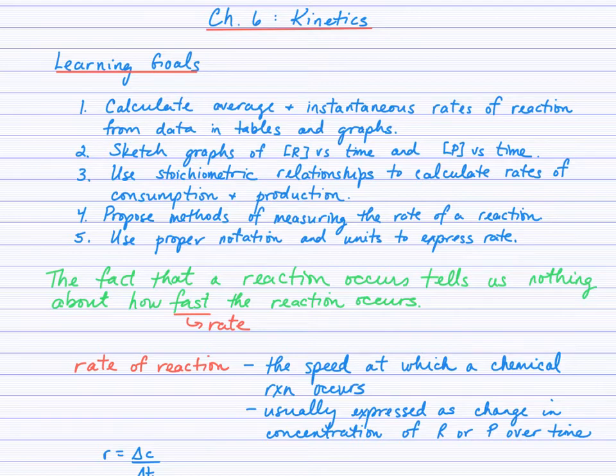From here you'll be able to calculate average and instantaneous rates of reaction, whether the data is in tables or graphs, sketch graphs of concentration of reactants versus time and concentration of products versus time, use the mole ratio stoichiometric relationships to calculate rates of consumption of reactants and production of products, propose methods of measuring the rate of a reaction, and use proper notation to manipulate the units to express rate.